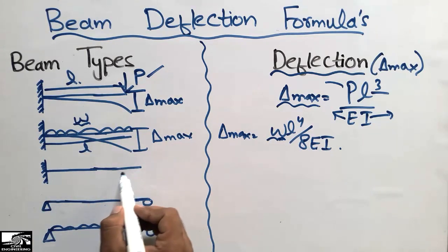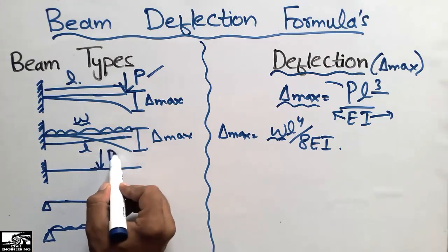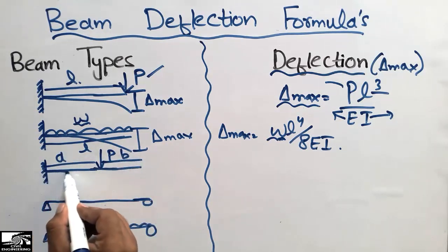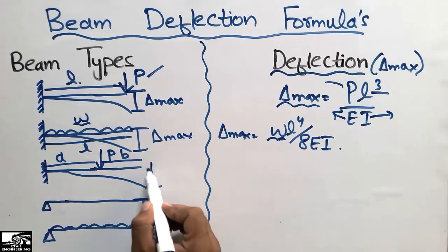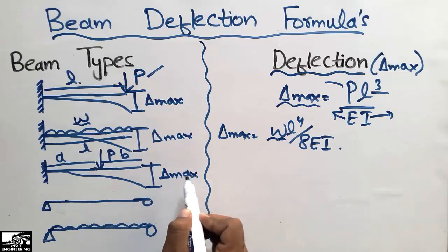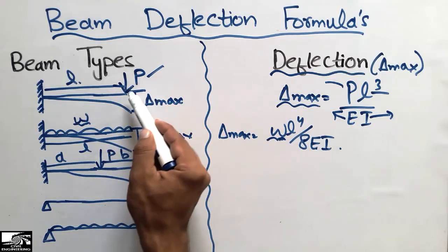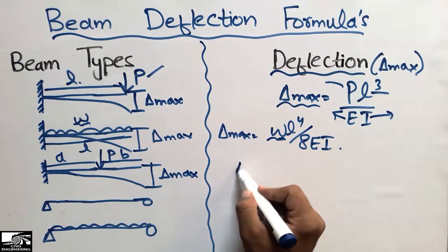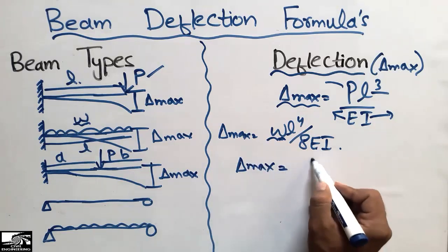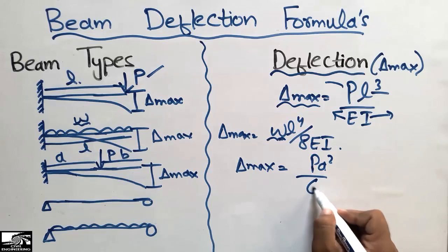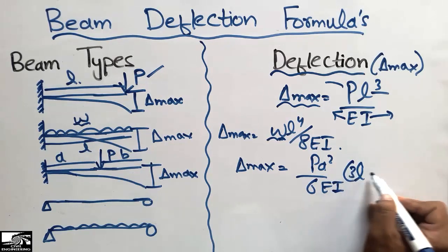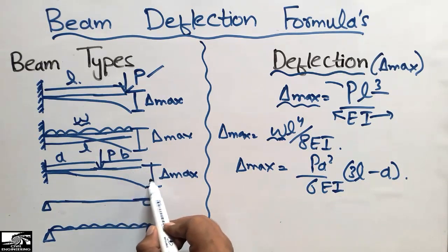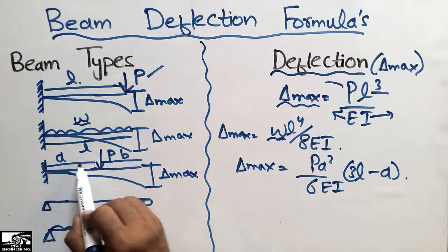The third type is also a cantilever beam, but with a concentrated load P applied at an intermediate distance — distance A from the fixed end and distance B from the free end. The beam deflects similarly, but the maximum deflection at the free end will differ. In this case, the maximum deflection at the end is equal to PA² divided by 6EI, multiplied by (3L minus A). This formula is used to find the maximum deflection when the load is applied at any distance from either end.